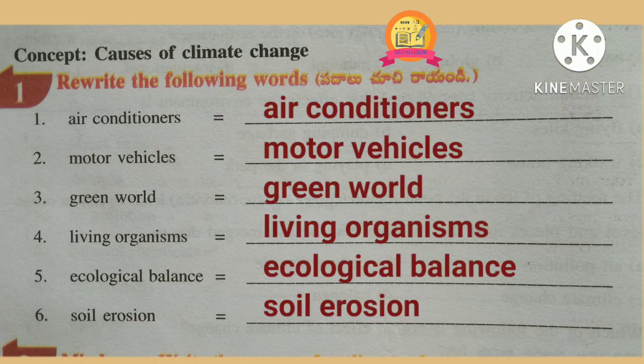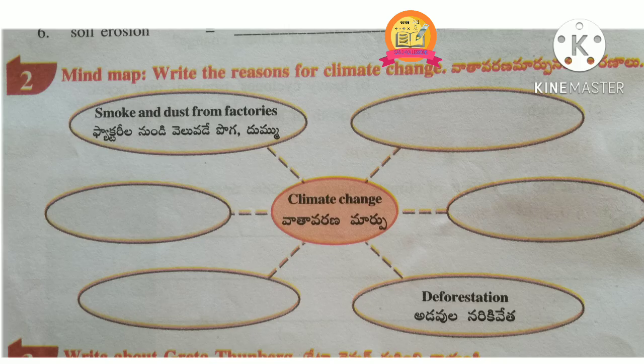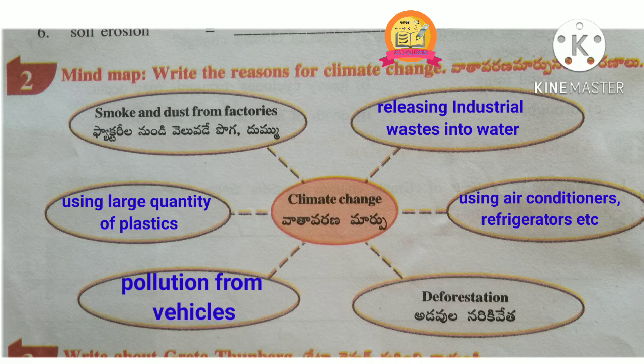First Roman: rewrite the following words. Air conditioners, motor vehicles, green world, living organisms, ecological balance, soil erosion. Second Roman — Mind Map: write the reasons for climate change. The reasons for climate change are smoke and dust from factories, releasing industrial wastes into water, using air conditioners and refrigerators, deforestation, pollution from vehicles, using large quantity of plastics.